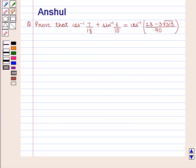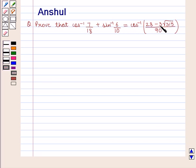Hello and welcome to the session. In this session, we are going to discuss the following question: prove that cos inverse of 7 by 18 plus sin inverse of 6 by 10 is equal to cos inverse of 28 minus 3 into square root of 315, by 90.